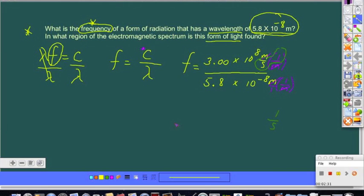Continuing on, frequency will equal - I'm going to take this one step at a time - 3 divided by 5.8 gives us a value of .54545 on our calculator, times now working with exponents.